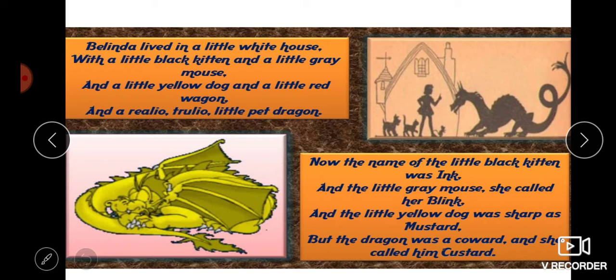In the first stanza, the rhyming scheme is: house–mouse and wagon–dragon, giving an AABB pattern. The word 'little' is repeated many times — this repetition stresses that all the animals in her household are little. So 'little' is a figure of speech called repetition.